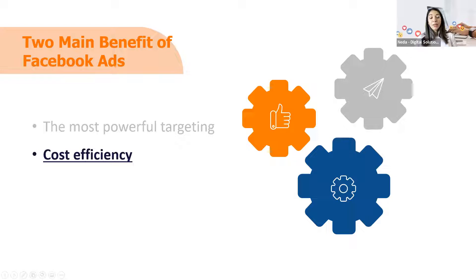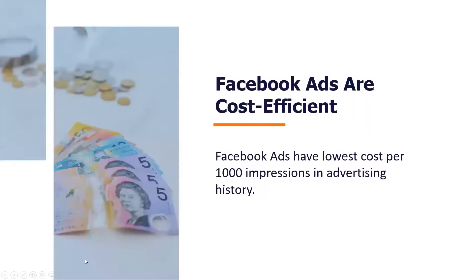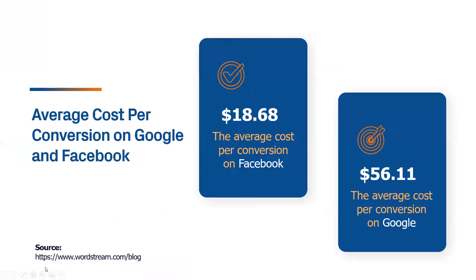The next benefit is cost efficiency. My first business back in 2001 — you were at the mercy of Yellow Pages, and if you had money, radio and TV. It was always expensive. Facebook ads are cost effective and still have the lowest cost per thousand in the advertising industry. The team at Wordstream analyzed hundreds of client accounts across 18 different industries and found the average cost per click was $1.72.